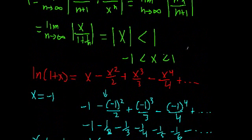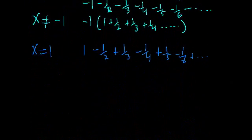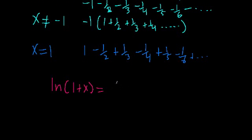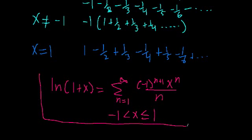So overall, we can say that the natural log of 1 plus x has the Maclaurin series expansion equal to the sum from 1 to infinity of negative 1 to the n plus 1, times x to the n, all over n. And this only holds true when x is greater than negative 1 but less than or equal to 1. So here we have the Maclaurin series and the particular requirements for convergence.